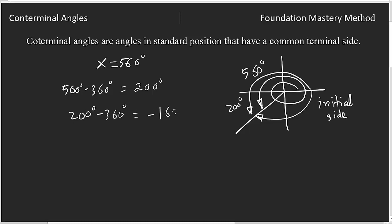Negative 160 degrees is the negative coterminal of 560, and 200 is the positive coterminal of 560. Both have the same terminal side. This is your terminal side here. I hope you have understood.